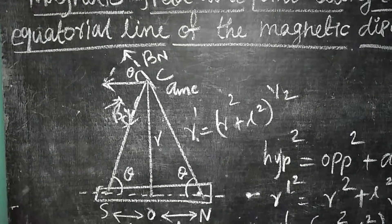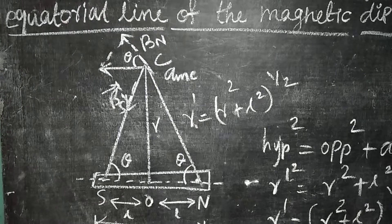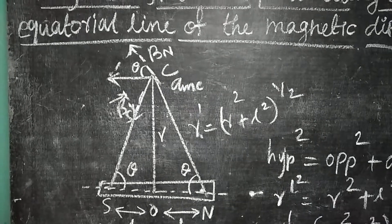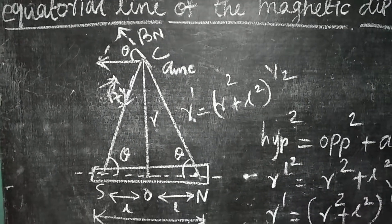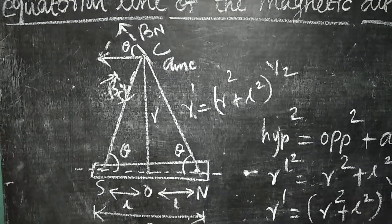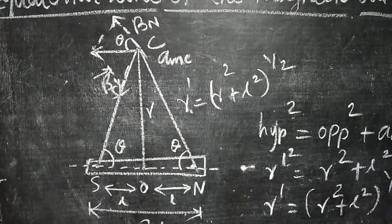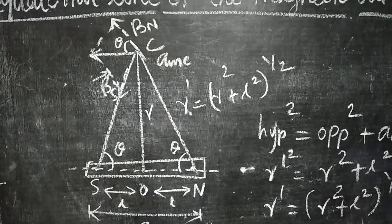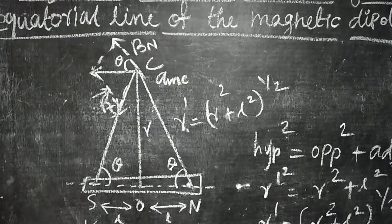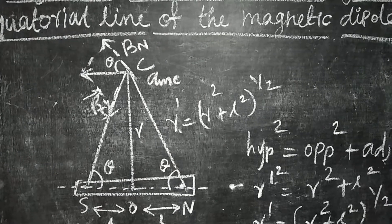From the diagram, N is the bar magnet. N is the north pole of the bar magnet, S is the south pole. The distance of the bar magnet is 2L. O is the geometrical center of the bar magnet. The distance between the south pole and geometrical center is L, and between the north pole and geometrical center is also L. C is a point at distance R from midpoint O along the equatorial line.